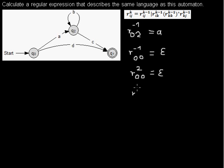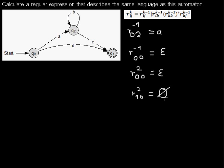The last example: you are allowed to go through any other state, and you want to go from state 1 to state 0. If you are in state 1, there is no leaving arc, so there is no way to reach state 0 even though you can go through any other state. There is no way, and that means the regular expression doesn't exist — it's an empty set.